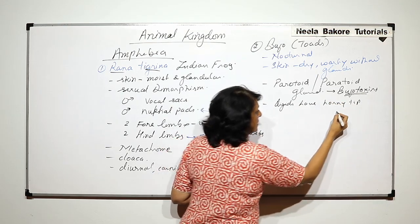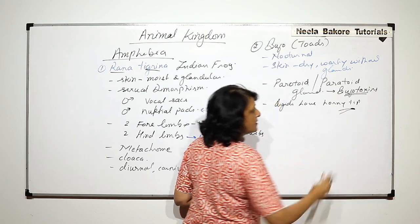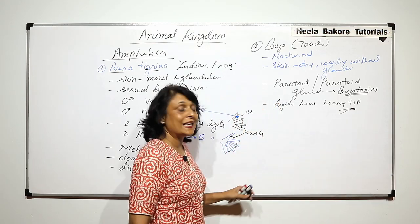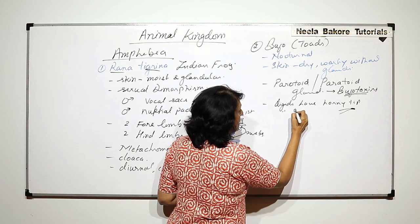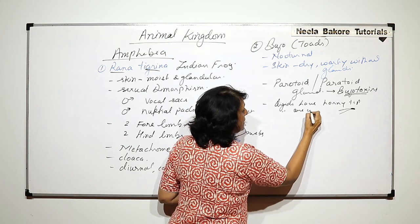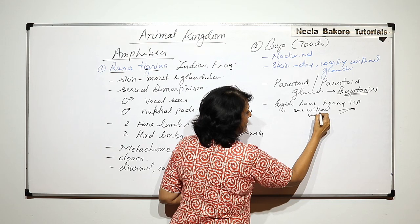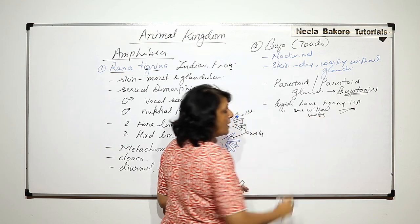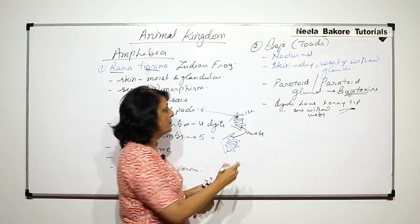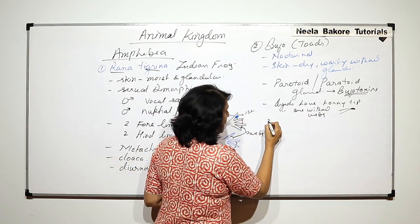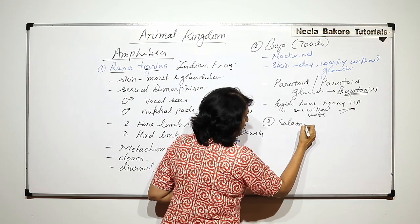Another difference is that the digits of toads have a horny tip, and the digits are without webs. So webs are absent in the case of toads.